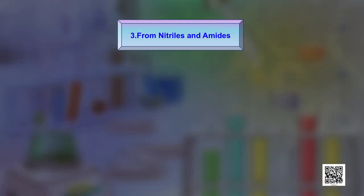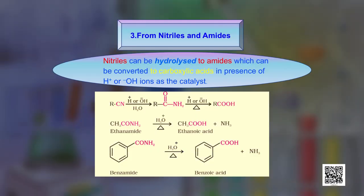In the third method for obtaining carboxylic acids, we start from nitriles and amides. Nitriles can be hydrolyzed to amides, which can be further converted to carboxylic acids in the presence of H⁺ or OH⁻ ions as catalyst. You can see in the reaction that nitriles are first converted to amides, and amides are then hydrolyzed to carboxylic acids. Similarly, we can start from amides directly and hydrolyze them to carboxylic acids.